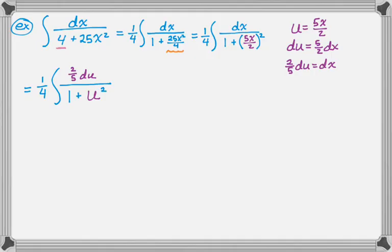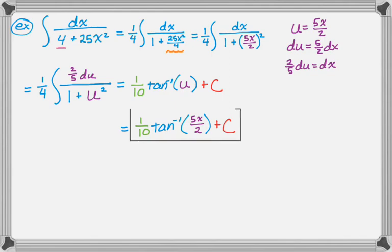And the next step, I'm going to pull the 2 fifths out. So I get 2 over 20, which is 1 tenth. Now it's just the integral of du over 1 plus u squared is always arctan of u, and plus c. And then go back to the original by making substitution. So we have 1 tenth the arctan of 5x over 2, and then plus c.